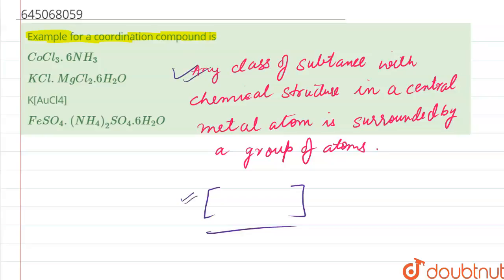So let us see the options. All the options given here have a dot in between. They don't have a bracket over them, hence they all are salts. But in option number C, we have bracket, and hence this is a coordination compound.